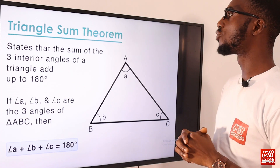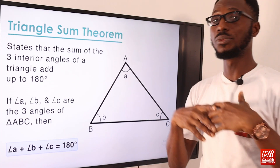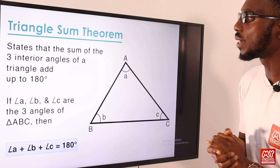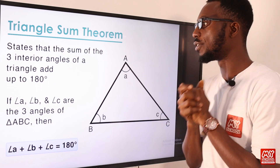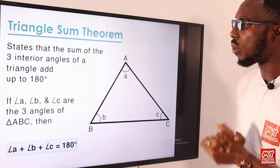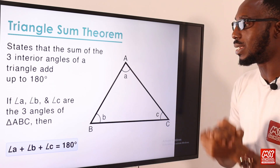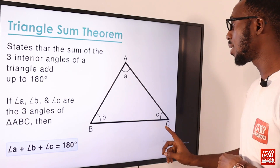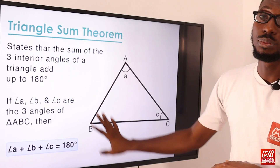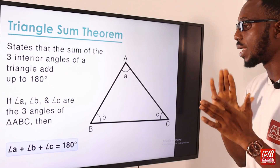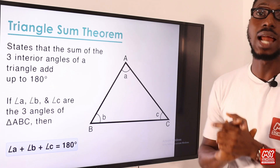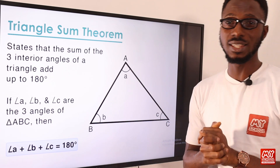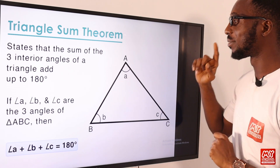We have the triangle sum theorem, which states that the sum of the three interior angles of a triangle adds up to 180 degrees. So angle A plus angle B plus angle C equals 180 degrees. This is very basic and fundamental.